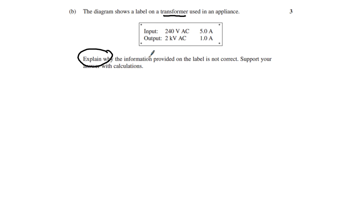Looking at the label, you need to form a causal and effect relationship. The big issue is when you look at the input versus the output and work out the power. The power input is 240 × 5 = 1200W. The power output is 2kV × 1A = 2000W.